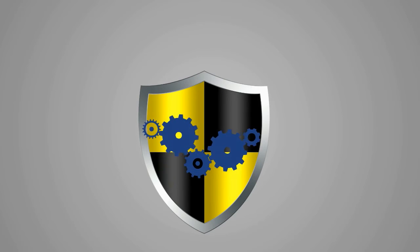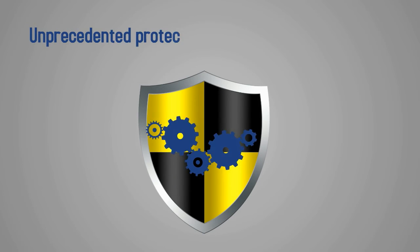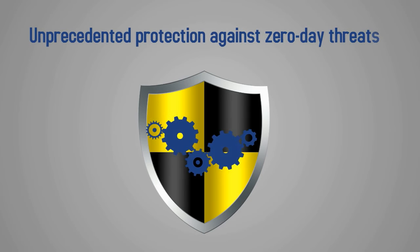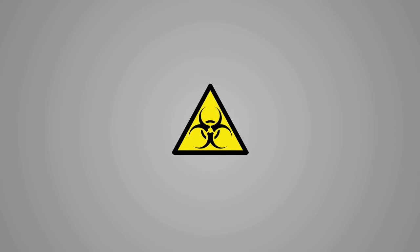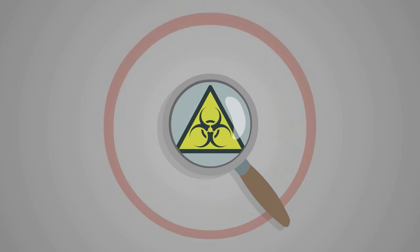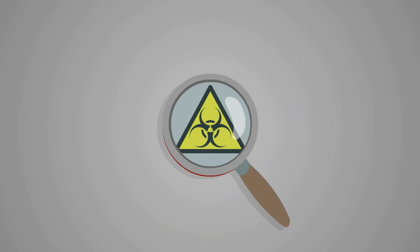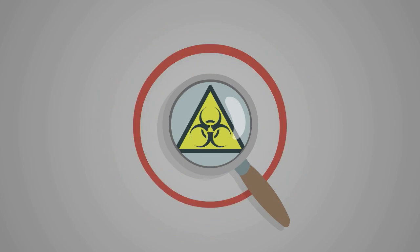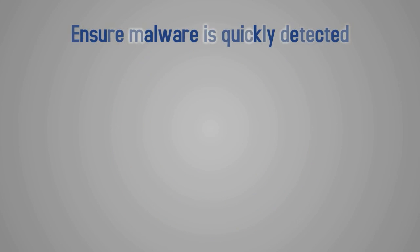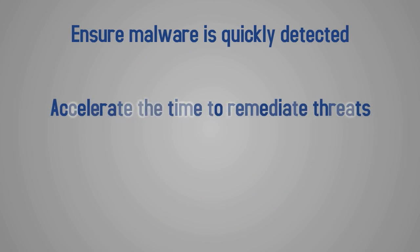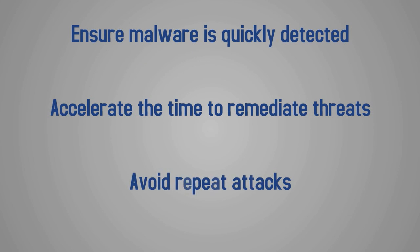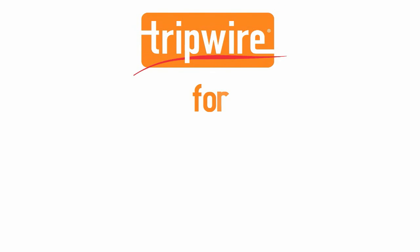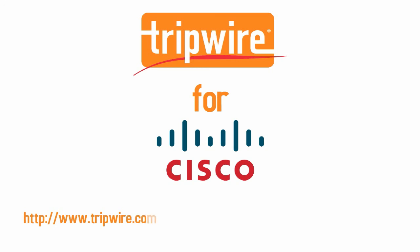With Tripwire and Cisco Threat Grid, you have unprecedented, automated protection against zero-day threats, whether known or unknown. With Tripwire Enterprise for Cisco Threat Grid, you get real-time endpoint monitoring and detection with malware verification and identification to ensure malware and malicious changes are quickly detected, accelerate the time to remediate threats, and finally put preventative measures in place to avoid repeat attacks. To learn more about Tripwire Enterprise for Cisco Threat Grid, visit us online.